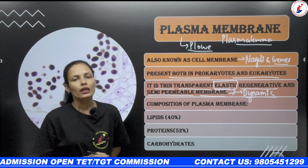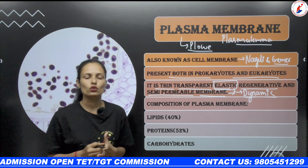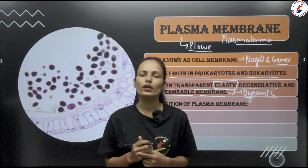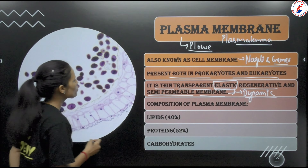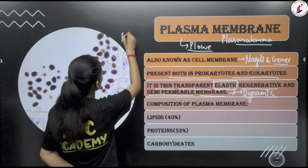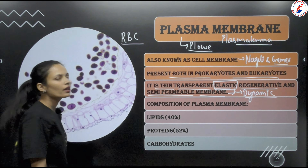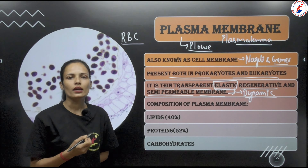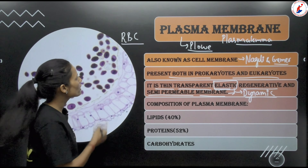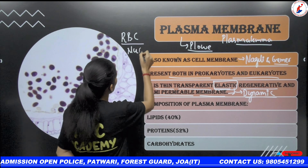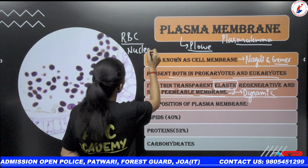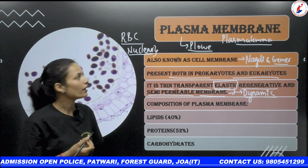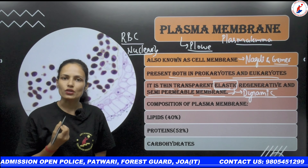Now let's talk about the chemical composition of the plasma membrane. The study of chemical composition was possible after the discovery of the electron microscope. The best material to study the plasma membrane is human RBCs or erythrocytes, because these cells have no nucleus and no cytoplasmic organelles like mitochondria, so they are the best material to study the plasma membrane.